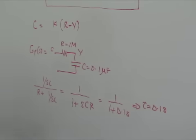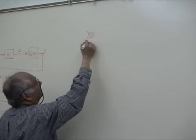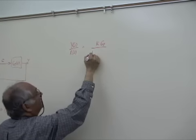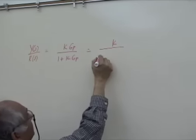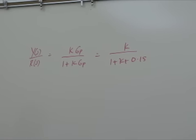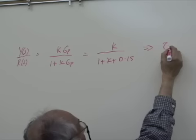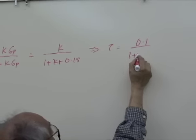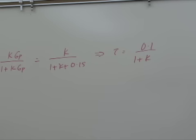What happens in the closed loop system? If we find the closed loop transfer function it will look like this. From here we can say two things about the closed loop system. One is that the time constant of the closed loop system will be much lower than the time constant 0.1 second of the open loop system.